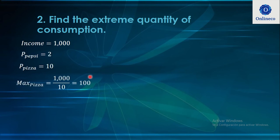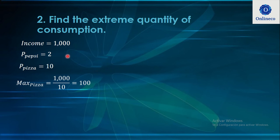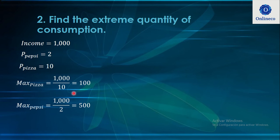Now we find the extreme quantities of consumption. If the consumer spends all their money on pizza, that's $1,000 divided by $10, so they can eat a maximum of 100 pizzas. This is an extreme situation because it implies spending nothing on Pepsi. Conversely, spending all income on Pepsi gives $1,000 divided by $2, which equals 500 cans of Pepsi.